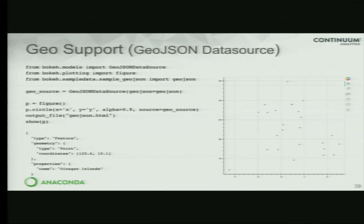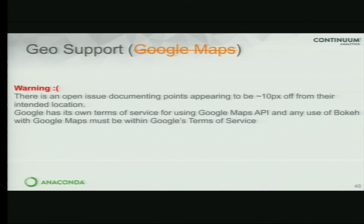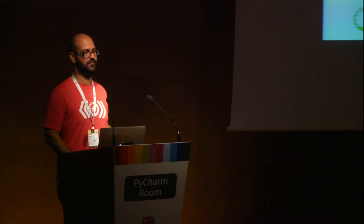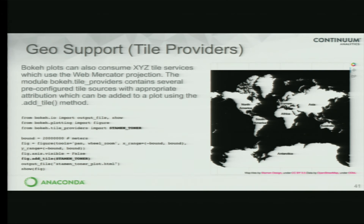We have much better geo support. We now support a GeoJSON data source that you can use to draw points on the screen. We still have Google Maps support, but Google changed their API terms — you now need your own key to use it, which they changed without warning so all tests failed. We're trying to check what we can do to make it just work. We also have good support for tile renderers: if you have any service that is a tile renderer, we provide support for consuming Mercator projections.